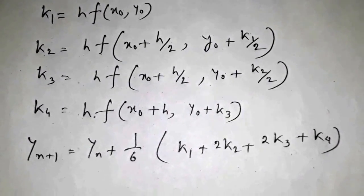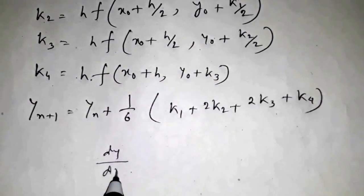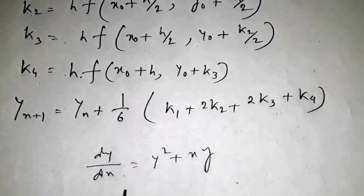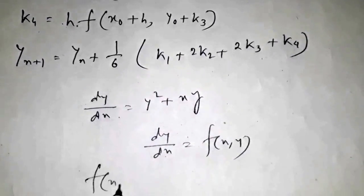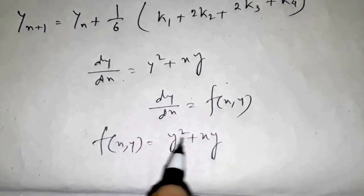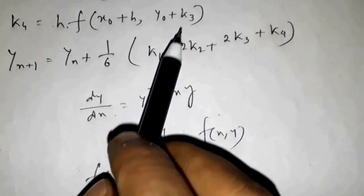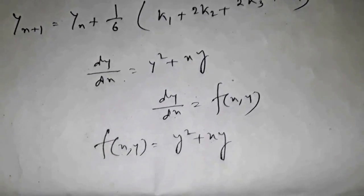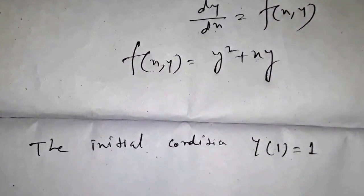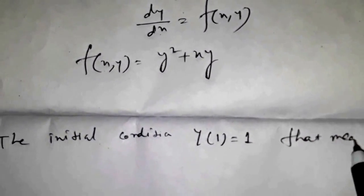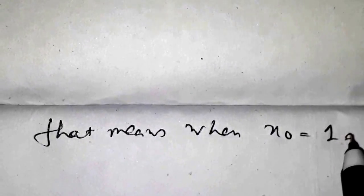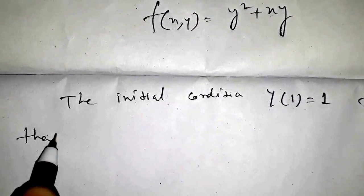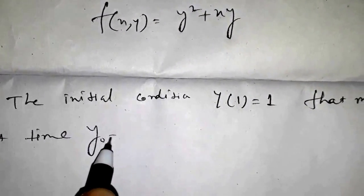We take dy/dx = y² + xy. We always consider dy/dx = f(x, y), so f(x, y) = y² + xy. The initial condition y(1) = 1 means x₀ = 1 and y₀ = 1.